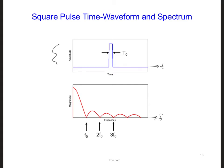We can see that the first null here in the spectrum occurs at f0 and f0 is equal to 1 over t0, or t0 is the width of the square pulse in seconds.